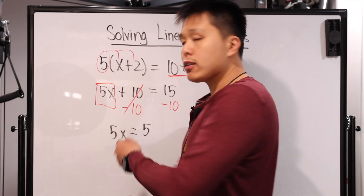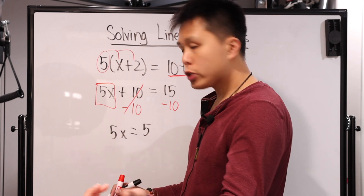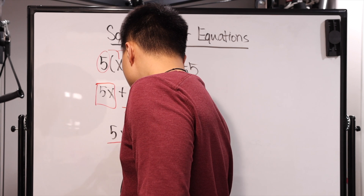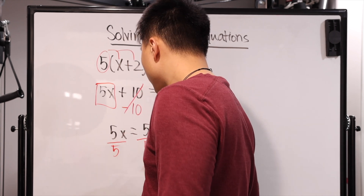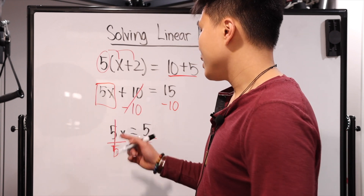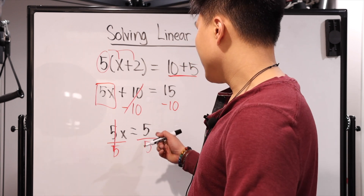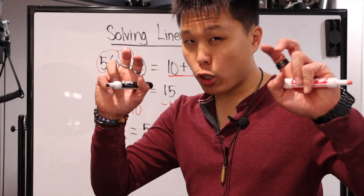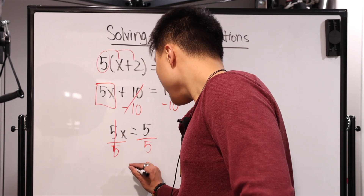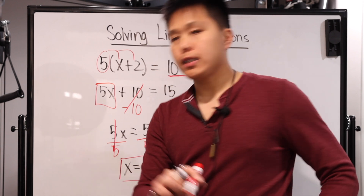Lastly, we now have 5x, which is 5 times x. We can't do step two anymore — we're done adding and subtracting. We do step three: multiplying and dividing. Since this is multiplication, we do the opposite and divide by 5 on both sides. This goes away. Be careful when I say 'go away' — 5 divided by 5 equals 1, and 1 times x is just x. It's not 0. So now you have x equals 1, and that is our answer for this second example.